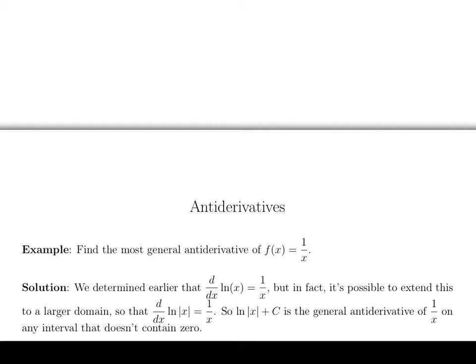So in fact, you should know that log of absolute value of x plus c is the general antiderivative of 1 over x. And as long as you do that on any interval that doesn't contain 0, it all works out fine. Since 1 over x isn't defined at 0, then you wouldn't want to do anything on an interval that contains 0.